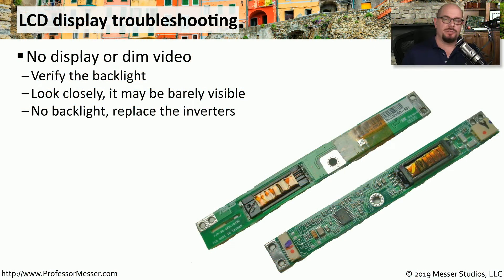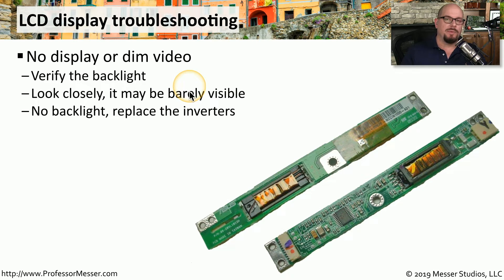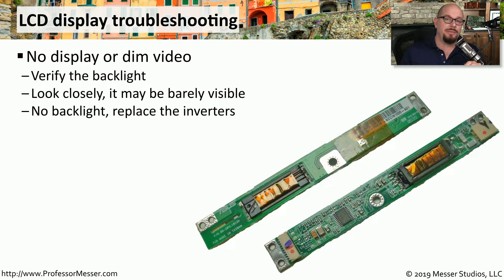If you're having problems seeing the display on an LCD monitor, or the display is very dim, you might be having a problem with the backlight. There's a light behind every LCD display that shines through, and if there's a problem with that backlight, you won't be able to see the image on the screen. If the backlight is completely out, you might still be able to make out some images — look closely or use a flashlight to see any images on that LCD display.